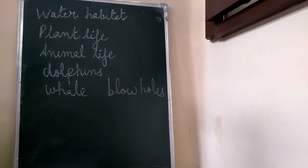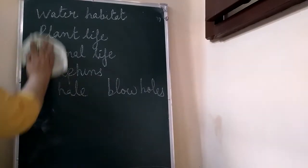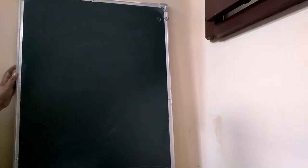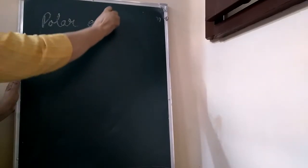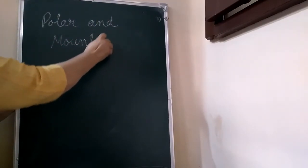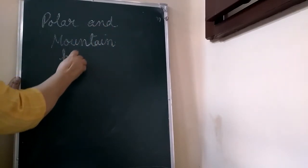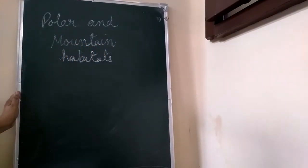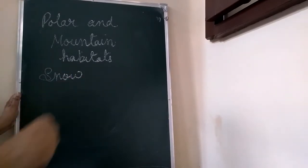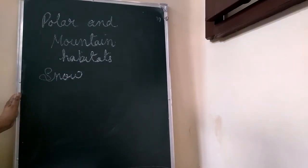Now, adaptations of polar and mountain habitat. We are going to discuss another adaptation for polar and mountain habitats. These habitats are cold. The polar regions are covered with snow. There may also be snowfall in mountain regions during the winter. Then, for the plant life.